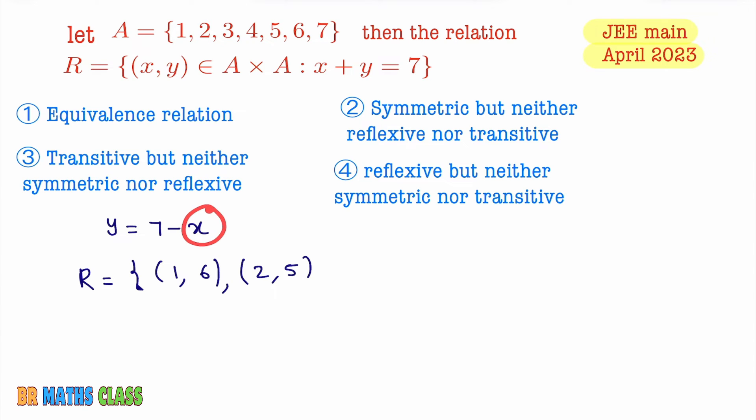Now you put x = 3. X = 3 means y = 7 - 3 = 4, so this is (3,4). Now you take x = 4, put x = 4, 7 - 4 = 3. Put x = 5, if you put x = 5, y = 7 - 5, so it is (5,2).